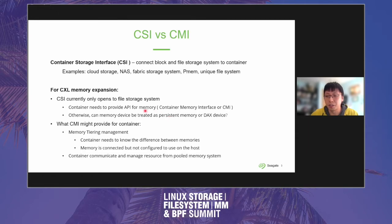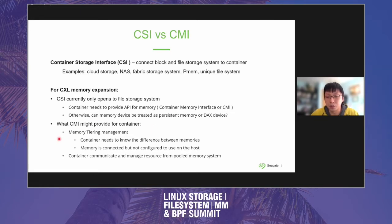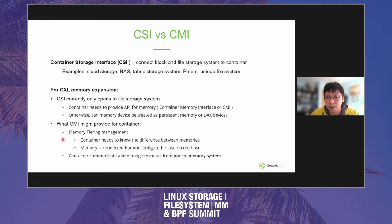Something people might call a memory interface. There are some possibilities: currently persistent memory can be used as a direct access device and a CXL device could probably be treated the same way. But is there a performance difference? Ideally a CXL memory device can be used as system memory with very little change required. One benefit a memory interface could give us is an opportunity for a tiering system.